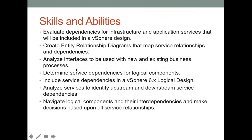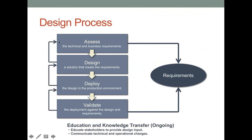It gets a little repetitive towards the end, so I'll talk quickly through that. When I do a vBrownBag, I like to talk about the design process. It has a couple of stages: the first is Assess, where you're doing health checks, learning about the infrastructure, gathering business requirements — functional or non-functional — and talking to key stakeholders. From there you gather information and start creating a design. Once it's customer-approved and meets all requirements, you go through deploy and validate. Everything ties back to the requirements.